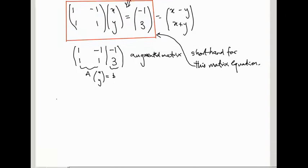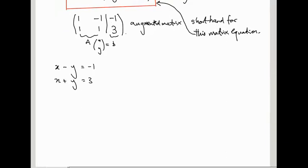So how might you solve a system of equations like this? I'm going to go through a series of steps to solve this set of equations and keep track of what's happening to the augmented matrix. The augmented matrix for our system is (1, -1 | -1; 1, 1 | 3). We can do things like add one equation to another, or multiply an equation by a constant, and that will have an effect on the augmented matrix.